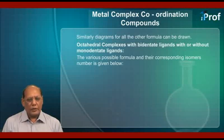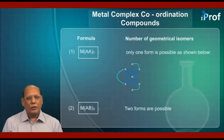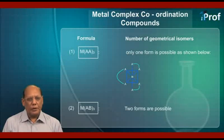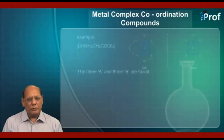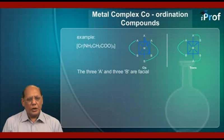The various possible formulas and their corresponding number of isomers are given below. First, we have the formula M(AA)3, where the three bidentate ligands are identical and both donor atoms are also the same or similar. Such a formula will have only one form. The second formula is M(AB)3, where two forms are possible. An example representing this formula is [Cr(NH2CH2COO)3].